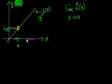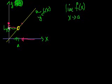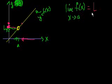And when we approach a from that side — we've done limits where you approach from only the left or the right side, but to actually have a limit, it has to approach the same thing from the positive direction and the negative direction. As we get closer and closer to a, f of x approaches this point L, or this value L. So we say that the limit of f of x as x approaches a is equal to L.